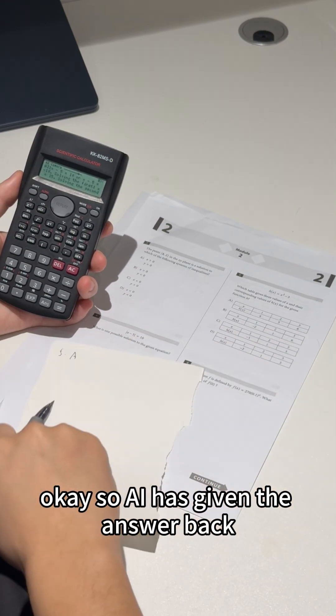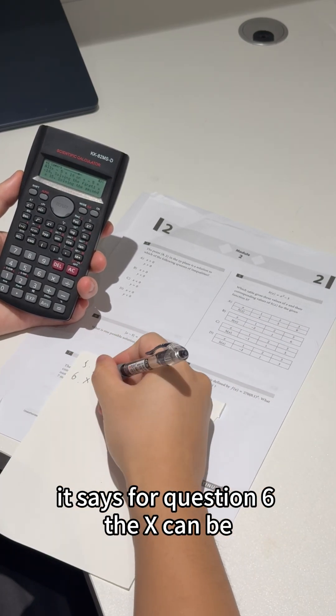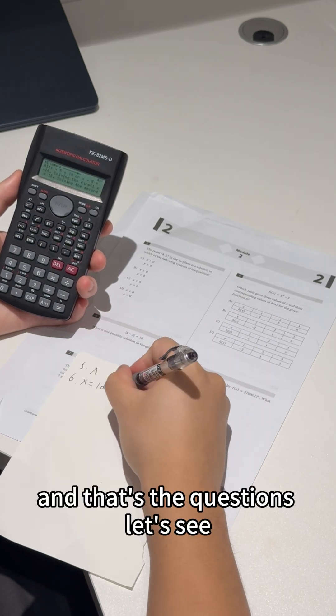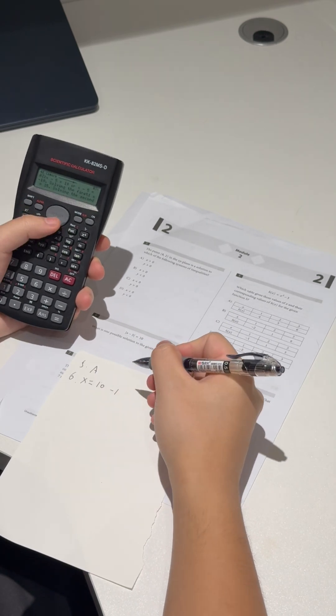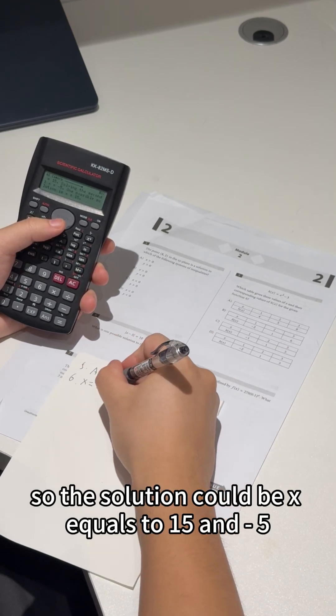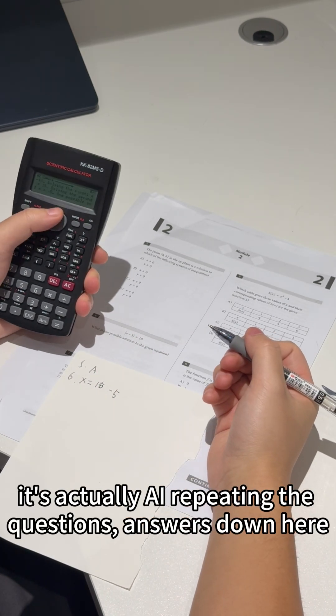Okay, so AI has given the answer. This says for question six, the x can be 10 or negative 10. Let's see, so the solution could be x equals to 15 and negative 5. I'm sorry, I just read the first line, but it's actually AI repeating the question and the answer is down here.